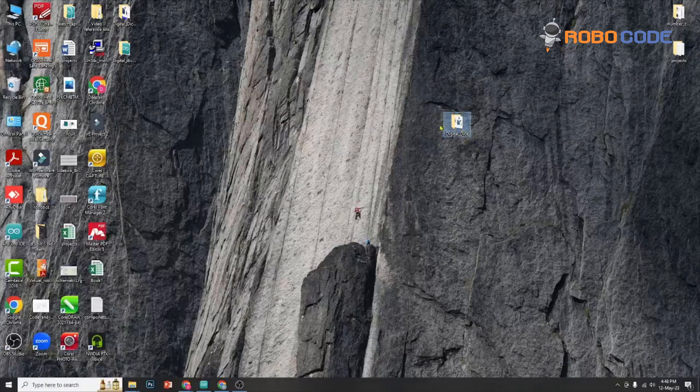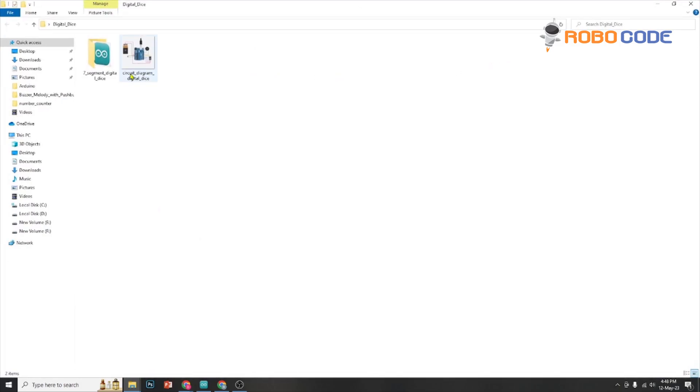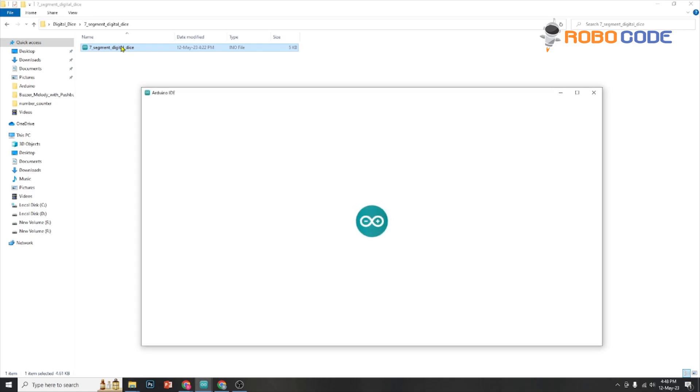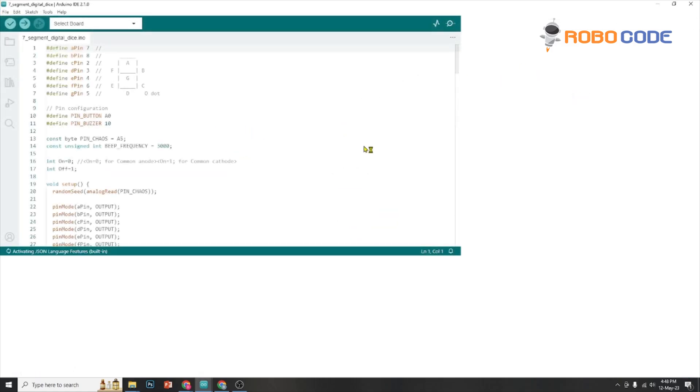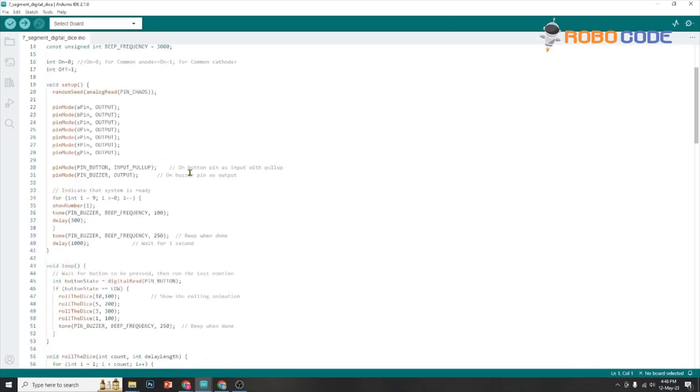We will point to the folder where the digital dice code is located. We will open it and double-click it, and it will open up the Arduino editor with the code. If it doesn't open, then you can click on file, new file, and copy-paste the code which you can see in the description of this video.